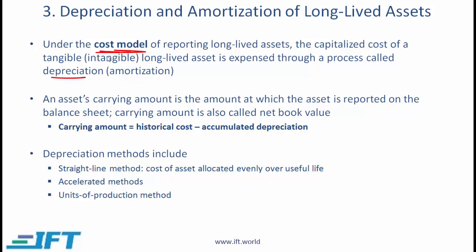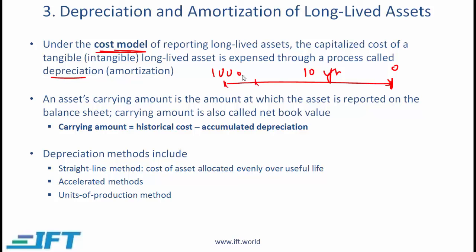The cost model is something you probably know about already. When you buy an asset, you record it at the initial cost plus however much it takes to set the machine up — let's say that amount is 1,000. If this machine is going to be used over 10 years and at the end of 10 years the salvage value is zero, then through depreciation you allocate the cost. Using straight-line depreciation, we take the 1,000 and break it into 10 parts — depreciating 100 every year for 10 years, spreading that cost over the useful life of the machine.